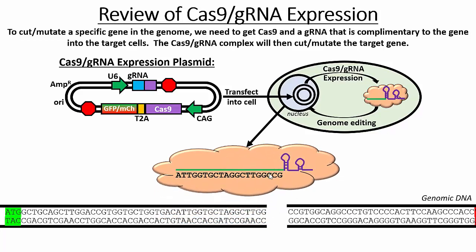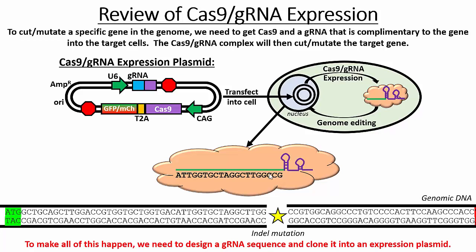The cell tries to repair that cut, but if it repairs it flawlessly, Cas9 cuts again. Inevitably Cas9 cuts, the cell repairs, and eventually the cell makes a mistake and either deletes a base or inserts a new base at that location, giving us a frameshift in the gene. That's hopefully something that knocks out that gene, gives us a loss of function mutation, and allows us to study the gene.